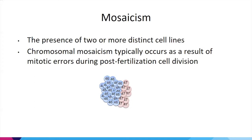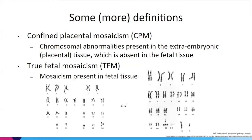There are three major risk categories related to mosaicism. The first is confined placental mosaicism — chromosome abnormalities present in extra-embryonic tissue, specifically placental tissue, that are absent in the fetal tissue. This can still be relevant because certain chromosomes can lead to growth issues for the developing fetus. The second is true fetal mosaicism, where mosaicism is present in the fetal tissue as well.